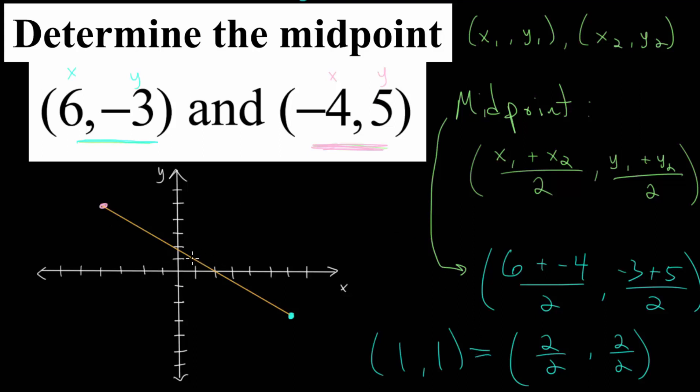And if we plot this point, that will be right about there, which is right where we thought it should be. And this should make sense. This line, visually speaking, looks like it's been cut into two equally sized pieces.